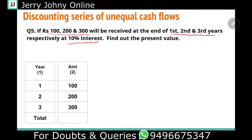So looking at the table formula: year 1, 2, 3 and the amounts 100, 200, and 300. Now there is a slight difference between compounding and discounting methods when you look at the table. With compounding, we have to focus on how long the amount has been compounded.